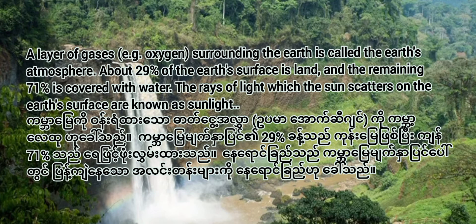About 29% of the earth's surface is land and the remaining 71% is covered with water. The rays of light which the sun scatters on the earth's surface are known as sunlight.